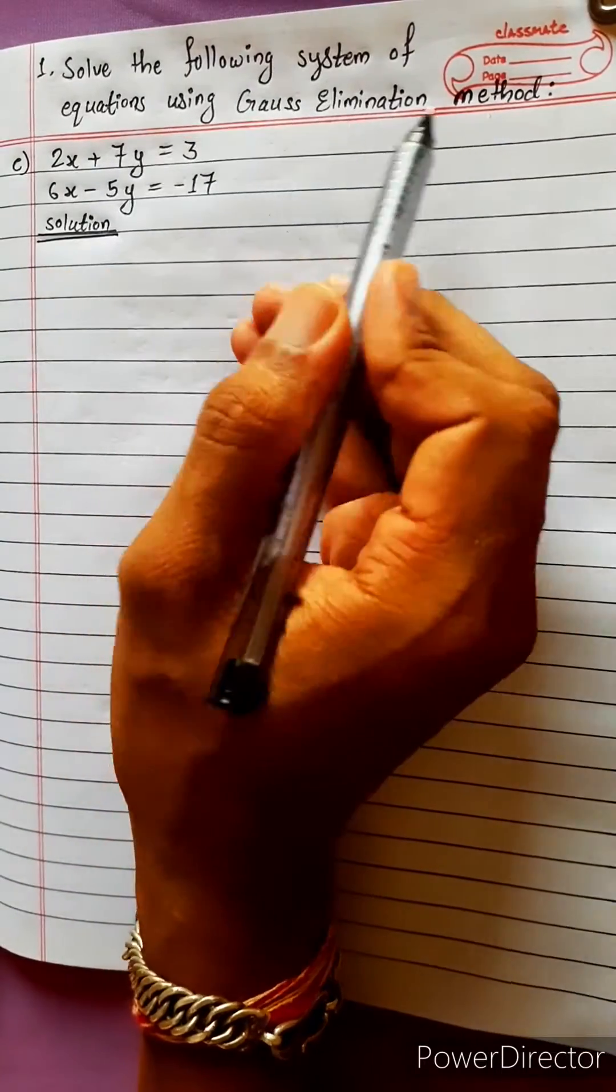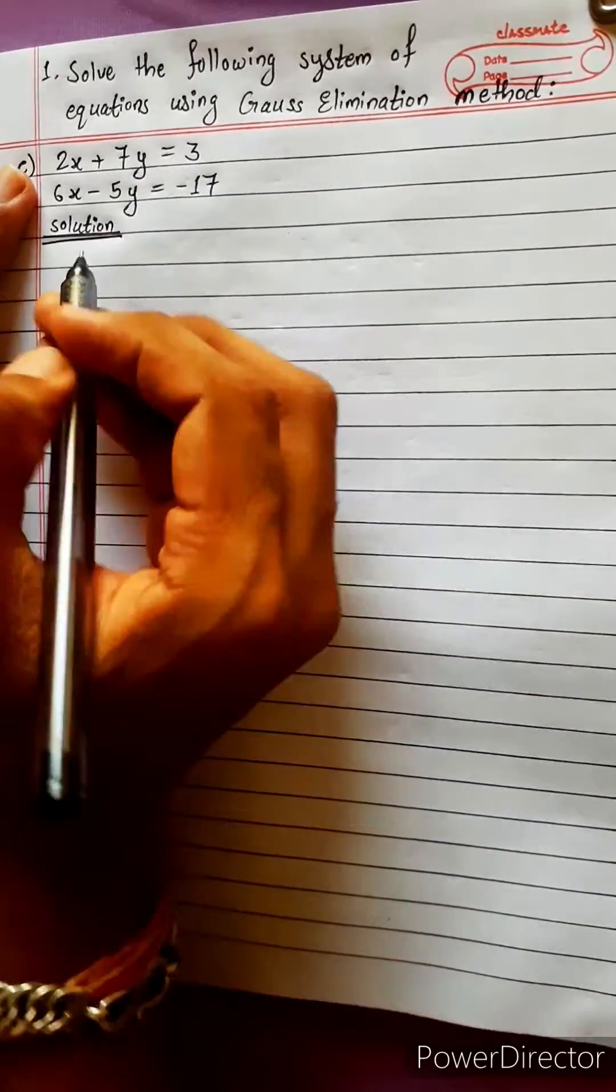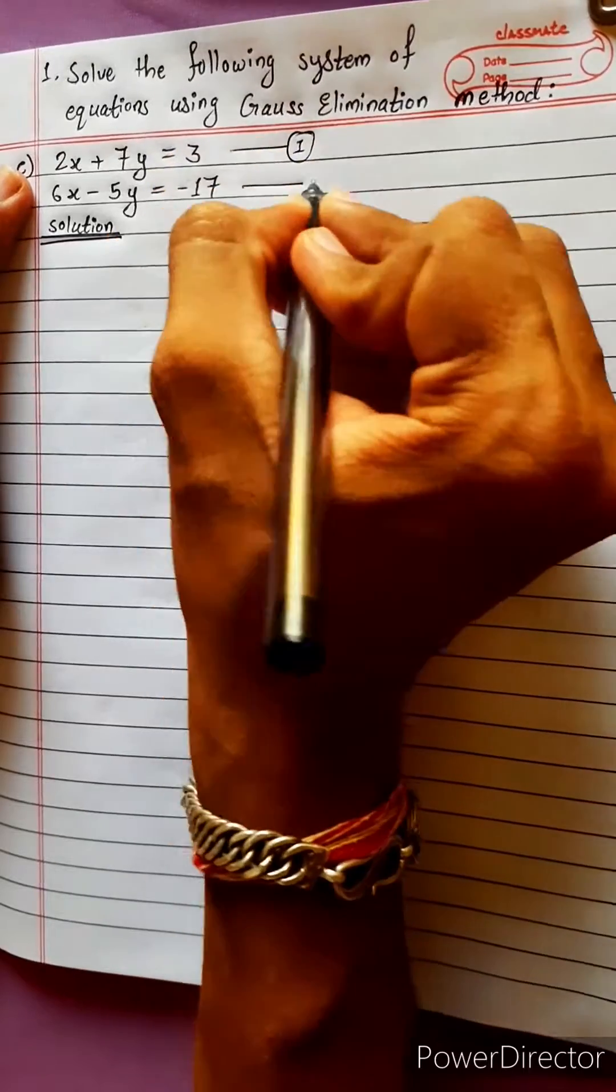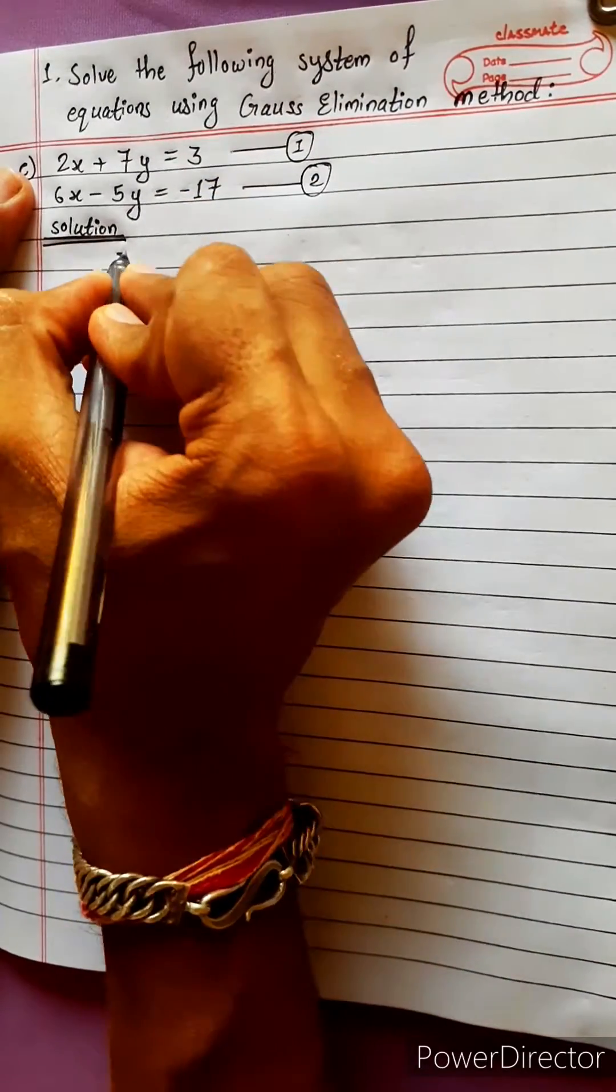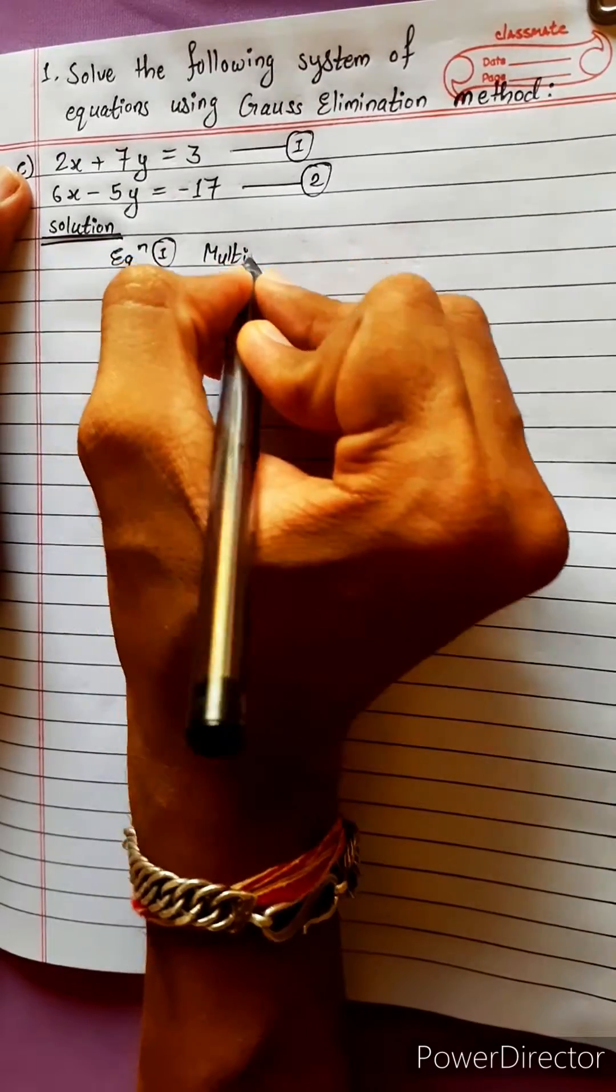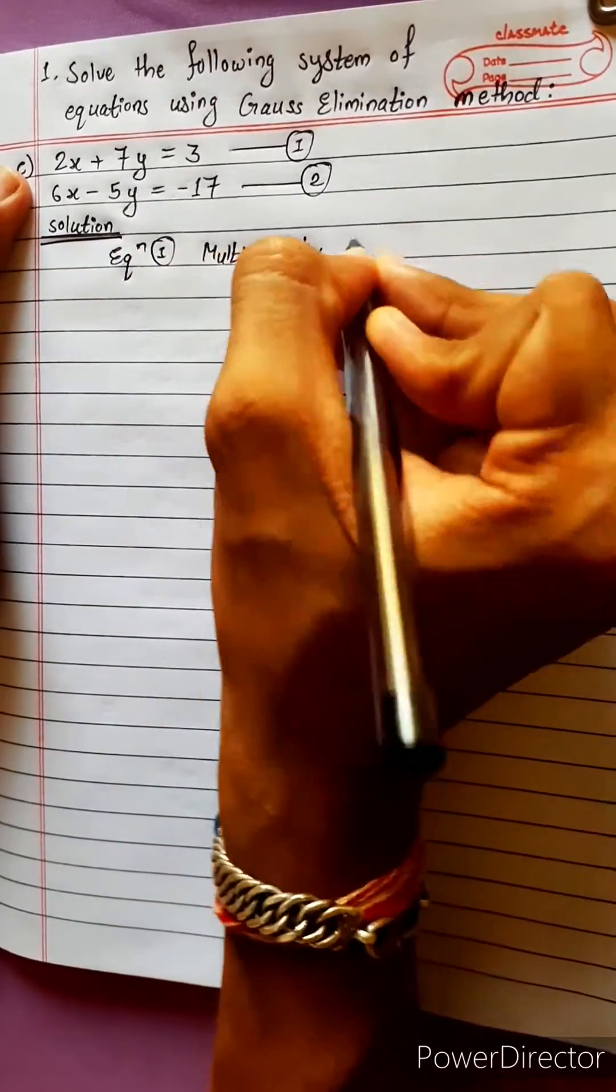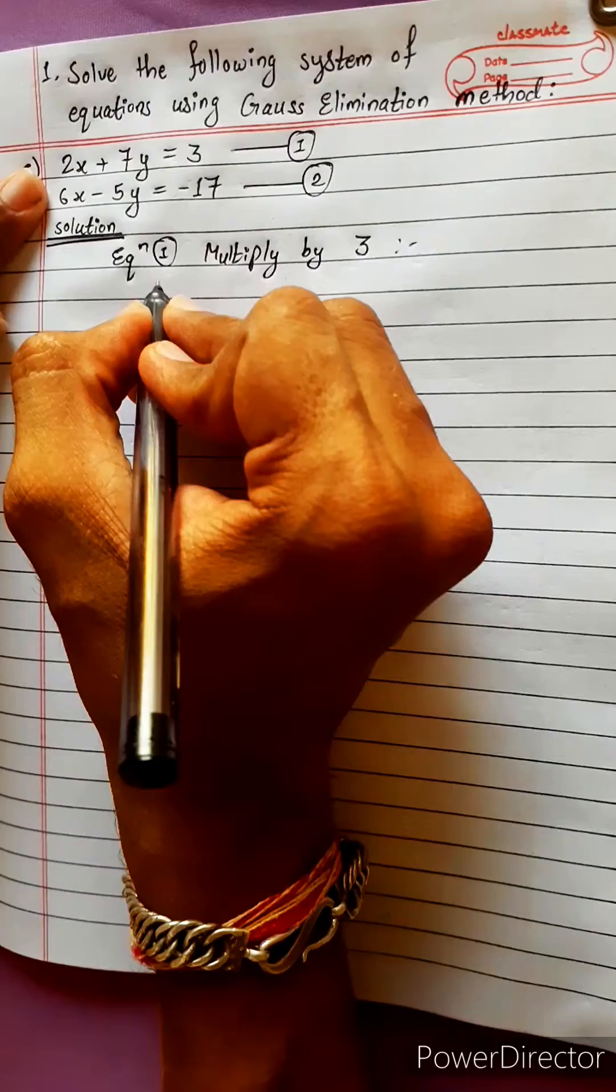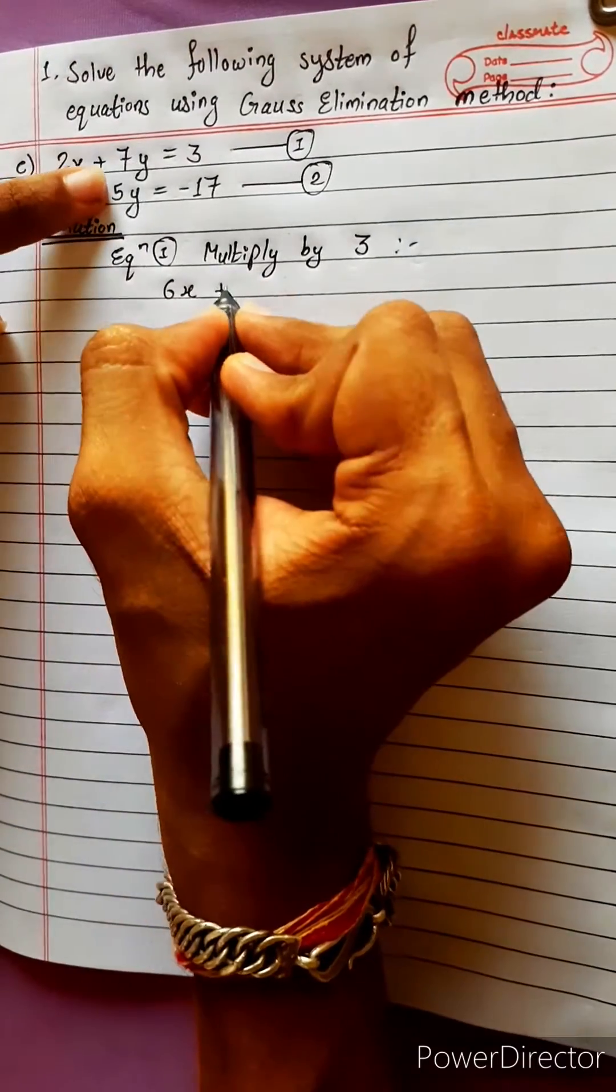Solve the following system of equations using Gauss elimination method. This is the coefficient of equation 1 and equation 2. Now we have the idea of equation 1 multiply by 3. Then we have 3 times 6x plus 7 times 3 equals 21y.